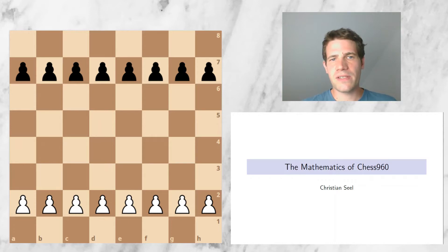The name Chess 960 refers to the fact that there are 960 different starting positions in Fisher Random Chess. The question we will go through today is why are there exactly 960 different positions?